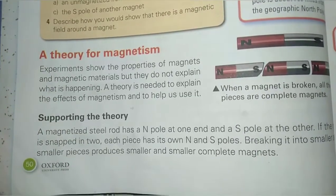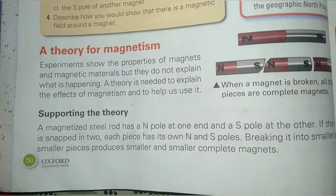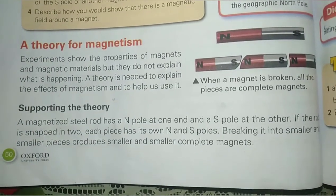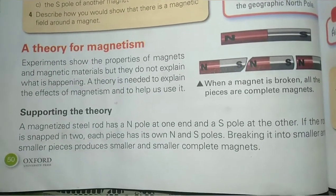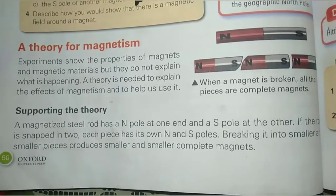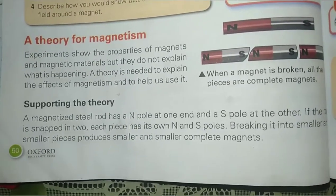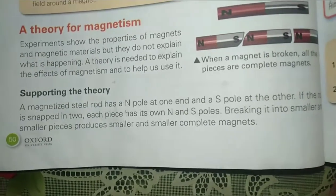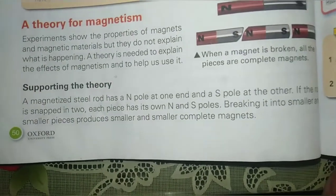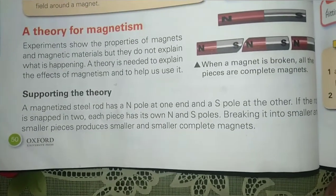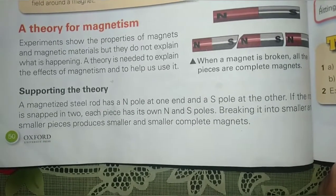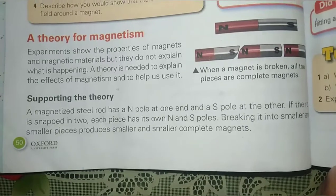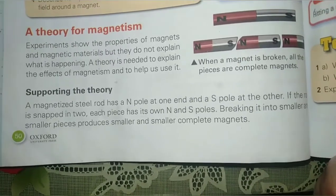Assalamu alaikum students, we have started chapter number four: magnets and electromagnets. Today our topic is a theory for magnetism. Experiments show the properties of magnets and magnetic materials, but they do not explain what is happening. A theory is needed to explain the effects of magnetism and to help us use it.